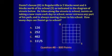Is it A, 126? B, 252? C, 462? Or D, 11 factorial over 5? That rectangle is six squares high and five squares wide.